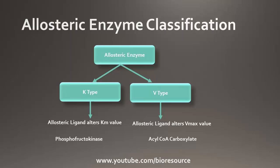The classification is based on the alteration of kinetic activity after ligand binding. In K-type, the allosteric binding alters the Km value whereas the Vmax value remains constant. In V-type, the allosteric binding alters the Vmax value and the Km value remains the same.